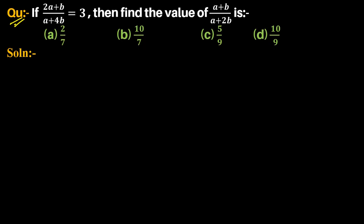Question: if (2a + b) / (a + 4b) = 3, then find the value of (a + b) / (a + 2b). So here, given that (2a + b) / (a + 4b) = 3.